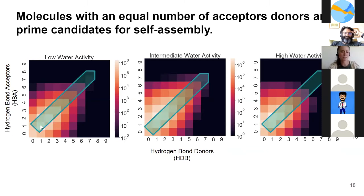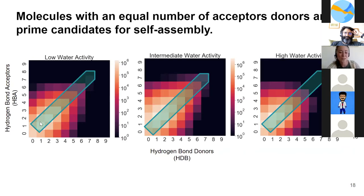The molecules that are probably the prime candidates for self-assembly are going to be the ones that have an equal number of donors and acceptors. So we're looking at the molecules that lie along this diagonal, at least for now until we perfect our pipeline. That's one way that we're screening.